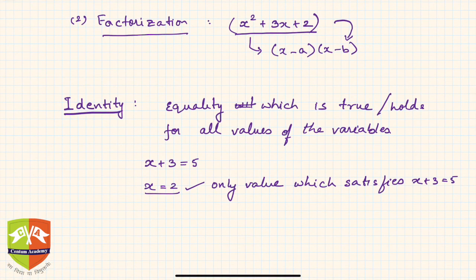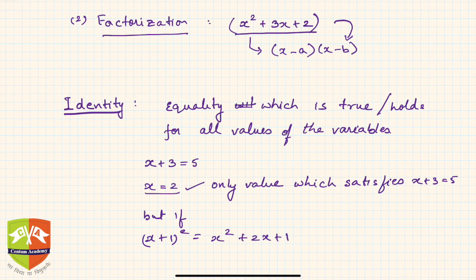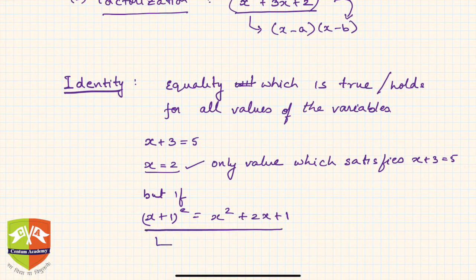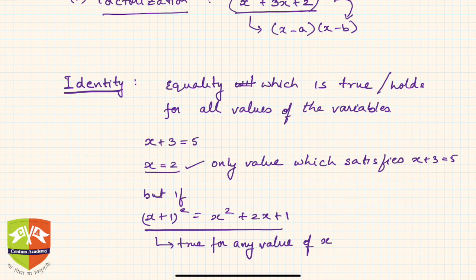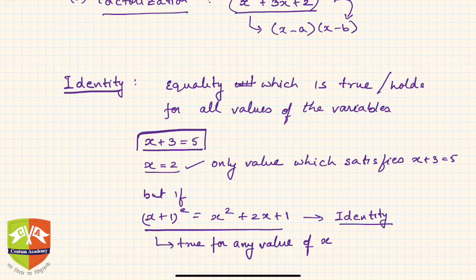But if we say (x plus 1)² equals x² plus 2x plus 1, this equality is true for any value of x. So this is an example of an identity. The plain equation x plus 3 equals 5 is not an identity. Identities are also equations, but equations are not necessarily identities.